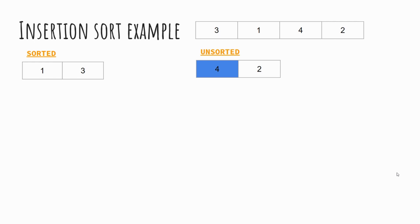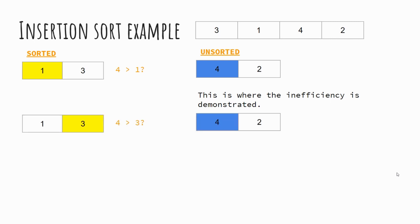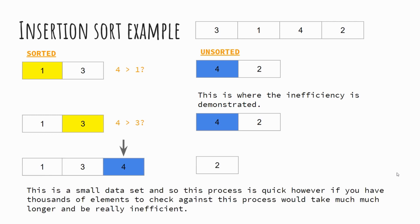Moving on, we're going to introduce the number four to our sorted list, and this is where it becomes apparent how inefficient this method of sorting can be. We compare to see if four is greater than one — it is — and therefore we insert the number four. If this were a much larger data set, say 1000 numbers, we could potentially have to go through every item in our sorted list to add each new element. This can be particularly time consuming. The larger the data set, the more inefficient it will be.